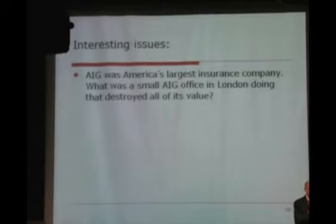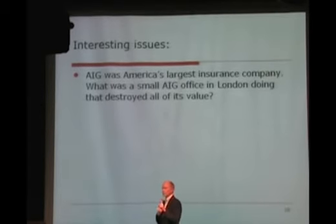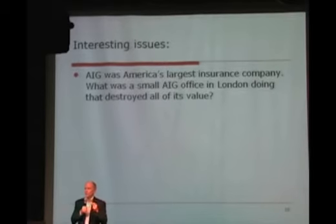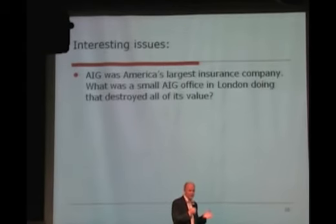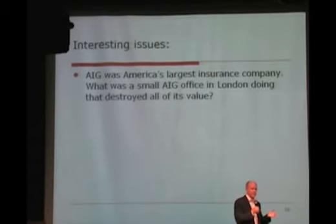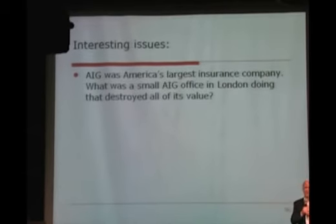AIG was at one time America's largest insurance company with over a hundred thousand employees. One office in London with about 40 employees was able to destroy all of AIG's value — similar to Long-Term Capital Management. AIG is still around because the United States government bailed them out; otherwise they should have gone out of business. How could one office in London destroy all that value? That's something we study as finance majors. The answer is that's the downside of not understanding derivatives.